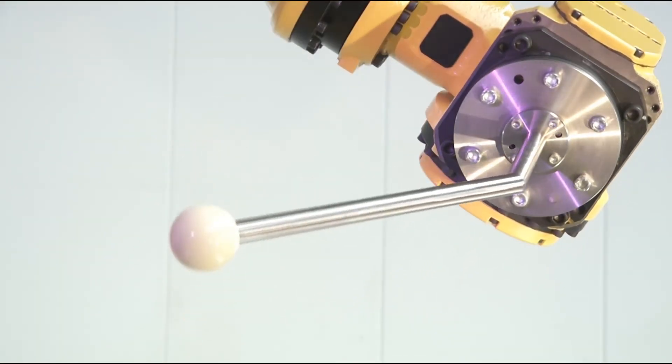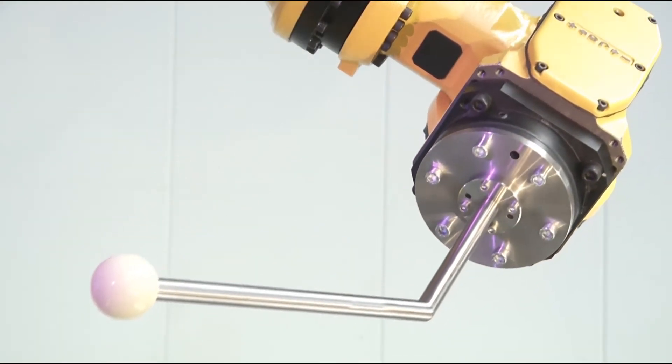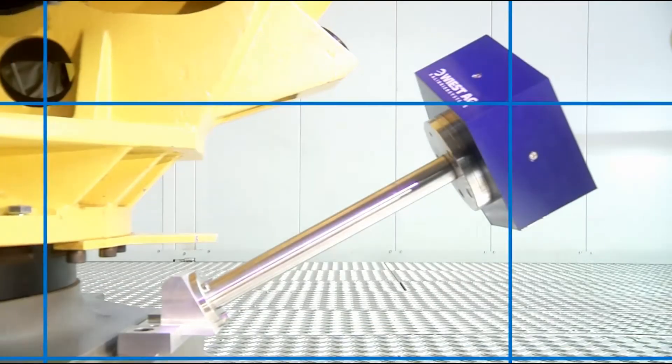After you have fixed the calibration ball to axle 6, affix the LaserLab to the calibration interface of the robot socket.